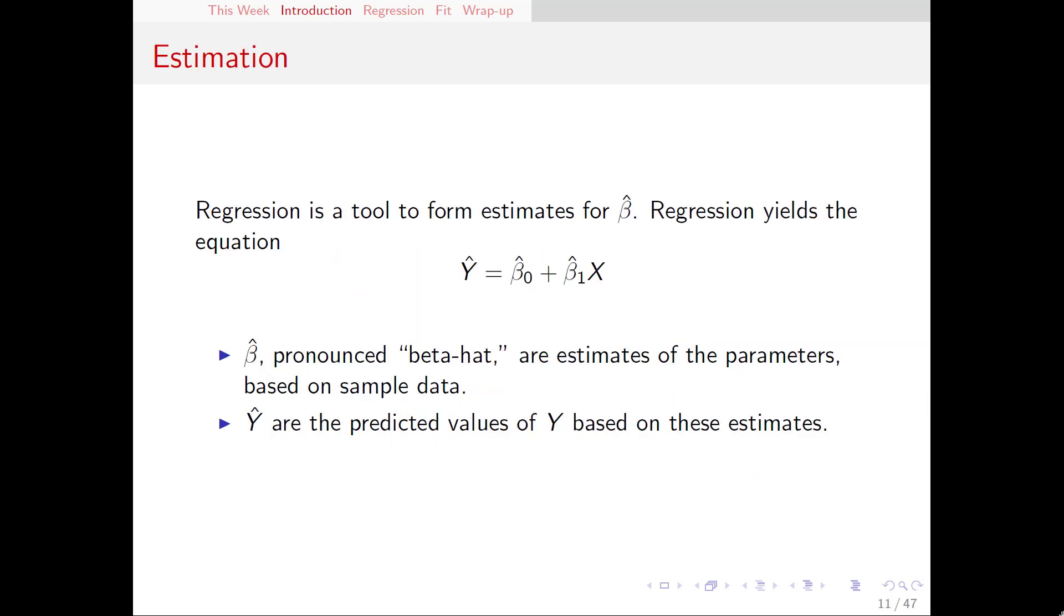Now that we have a sample, we're ready to actually run a regression. Regression is our method for coming up with those estimates for β₀ and β₁. Remember that β₀ and β₁, those parameter values, exist in the population and we can't see them.